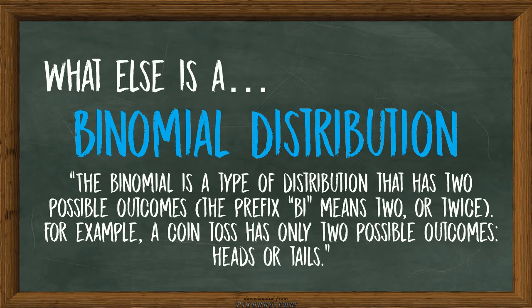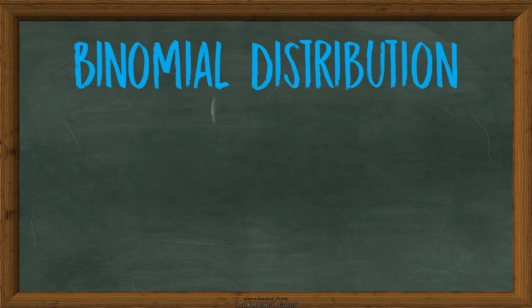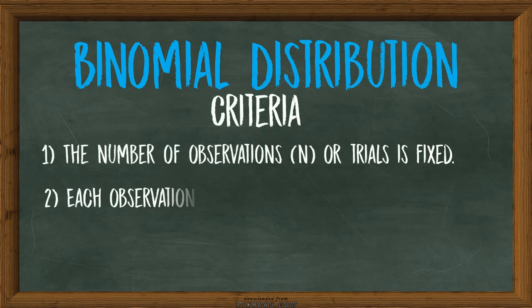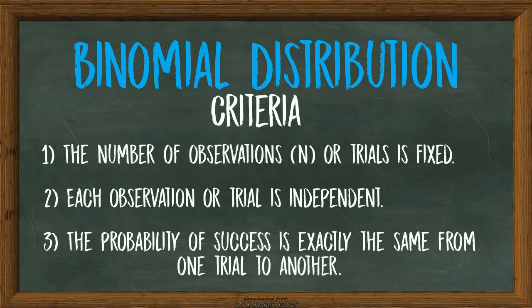The binomial distribution also has several criteria. Number one: the number of observations or trials is fixed. Number two: each observation or trial is independent. Number three: the probability of success is exactly the same from one trial to another.